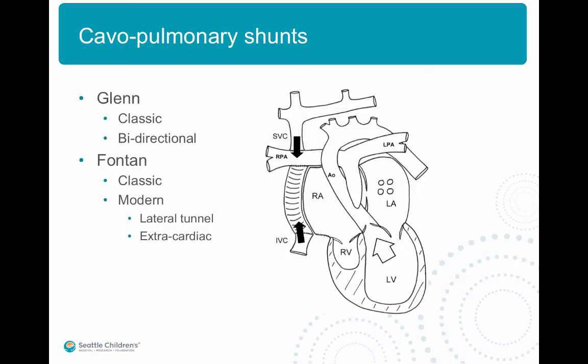The cavopulmonary shunts include the Glenn and the Fontan. The Glenn classically was an end-to-side anastomosis of the superior vena cava to the right branch pulmonary artery, with the right branch pulmonary artery divided from the main pulmonary arteries, so that the entire flow from the superior vena cava was directed just into the right lung. Currently, the right branch pulmonary artery is left confluent, and blood from the superior vena cava flows bidirectionally to both lungs.